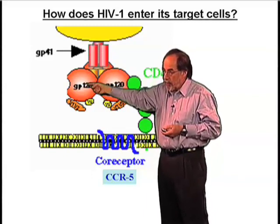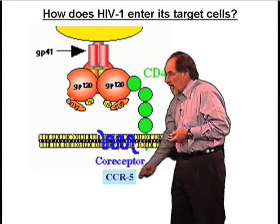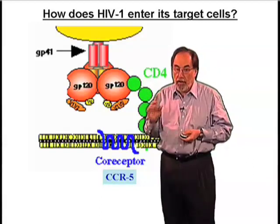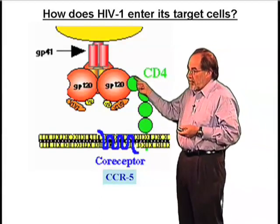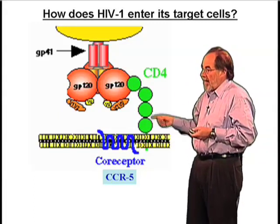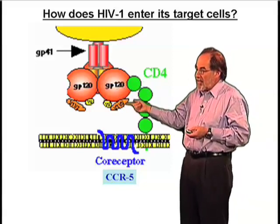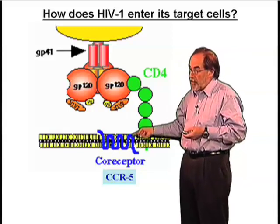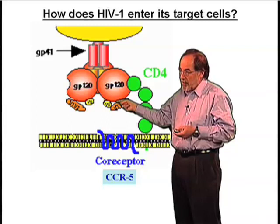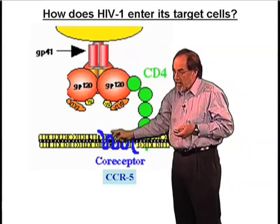There's one monomer each of GP41 and GP120 in complex, separated by a protease. This is the infected cell down here. That cell has a molecule called CD4 on its surface. Only cells that have CD4 on their surface are infected by HIV, because the first thing HIV does is interact with CD4 via a place on the GP120 molecule. That interaction causes a wholesale change in the structure of the trimer, generating a binding site for another protein called a co-receptor, CCR5. After CD4 is bound, the virus develops a CCR5 binding site and binds there. Fusion occurs between the membrane on the virus and the membrane on the cell.